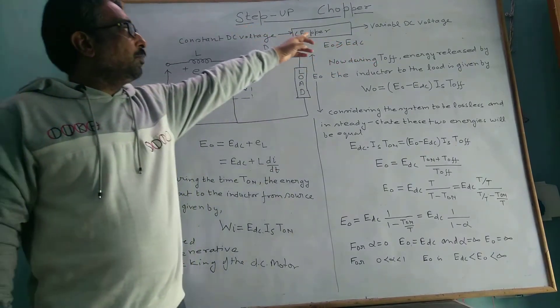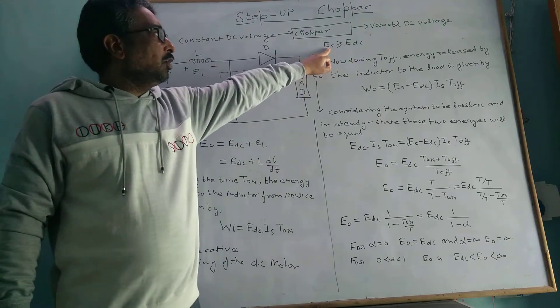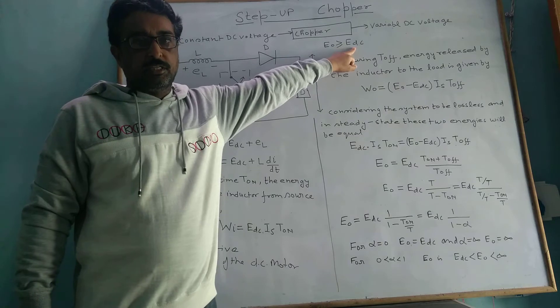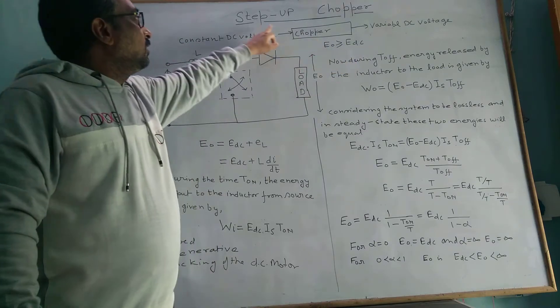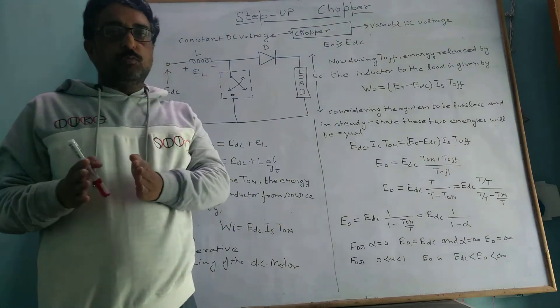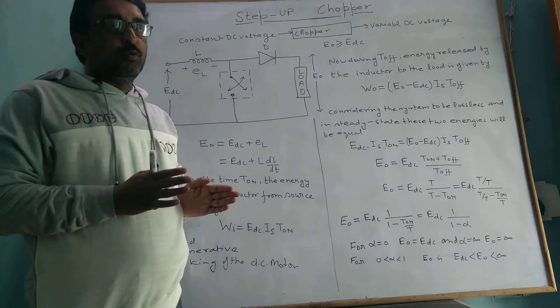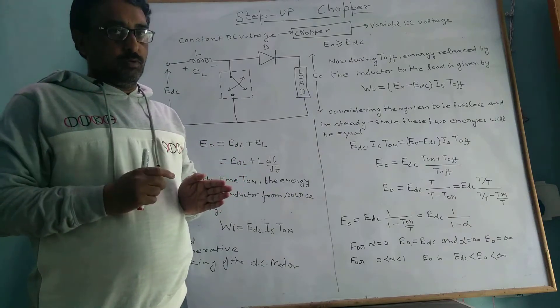Chopper is used for converting constant DC voltage into variable DC voltage. For the step-up chopper, when the variable DC voltage output E₀ is greater than E_DC or supply voltage, then it is step-up chopper. When output voltage is greater than input voltage, then it is step-up chopper.